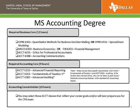The required accounting core — nine hours that all MS Accounting students must complete — consists of advanced classes building on undergraduate accounting. Accounting 6333 is Advanced Financial Reporting. Accounting 6353 is the Fundamentals of Taxation II, and Accounting 6382 is Advanced Auditing. These classes have specific prerequisites: Fundamentals of Taxation II requires Fundamentals of Taxation I, and Advanced Auditing requires the first auditing class. If you have not taken these, you may take them as part of your graduate program — they will count towards your 36 hours as graduate accounting electives.